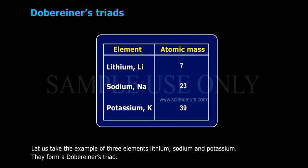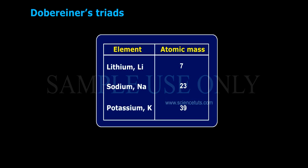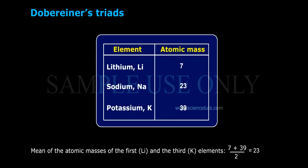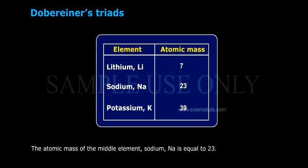For example, lithium, sodium, and potassium form Döbereiner's triad. Lithium (Li) has atomic mass 7, sodium (Na) has atomic mass 23, and potassium (K) has atomic mass 39. The mean of the atomic masses of the first element Li and the third element K is (7 + 39) / 2 = 23u, which equals the atomic mass of the middle element sodium (Na), 23u.